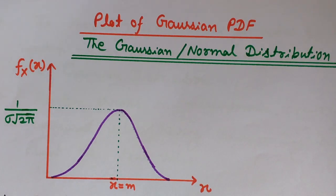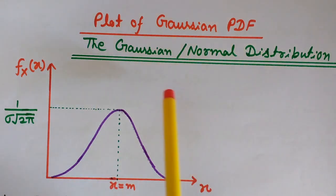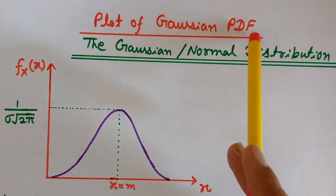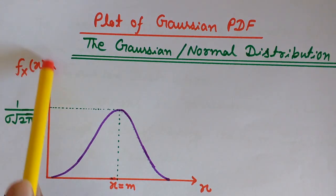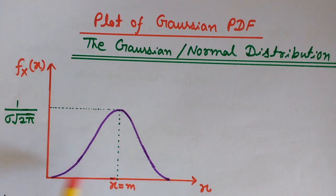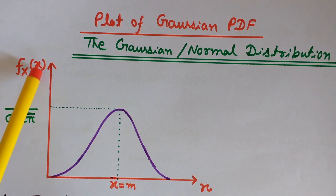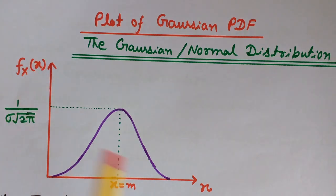Hi, this is Lalith and you are watching Engineering Made Easy. In this video we will see the Gaussian distribution, also known as the normal distribution, and we will discuss the plot of the Gaussian PDF — probability density function. This plot is between the probability density function and X, where capital X is the random variable and small x is the values of the random variables.